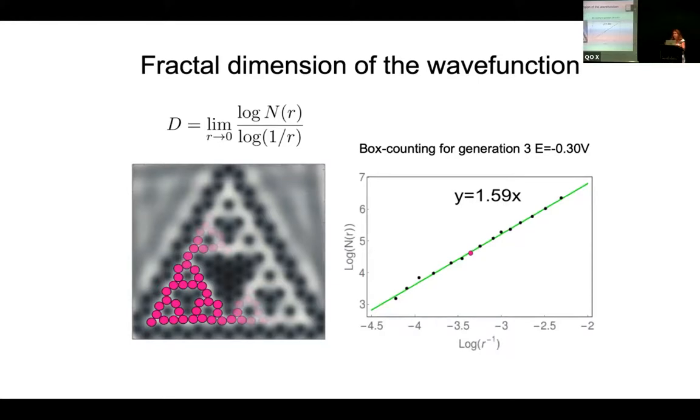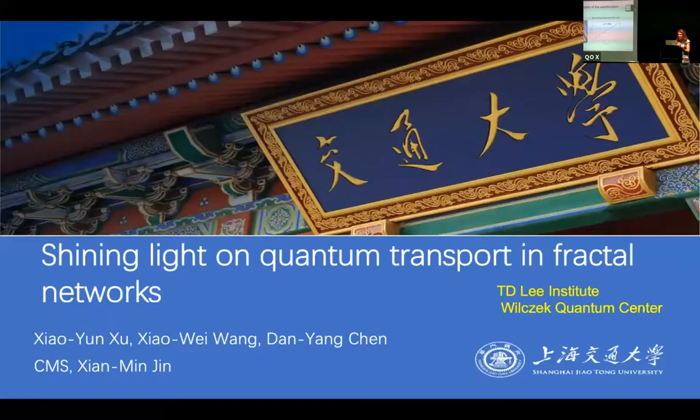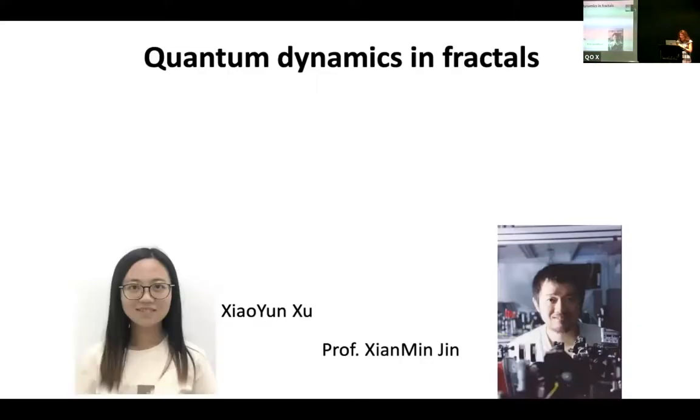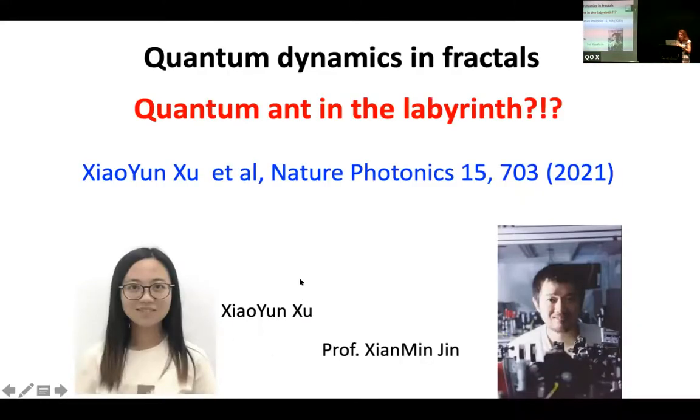But those were static fractals. With the STM, I cannot study dynamics. And now I would like to understand how is the transport, quantum transport in a fractal. So that's what I went on to study together with the group of Xian Ming Jin at Shanghai Jiao Tong University in China. So this work has been mostly performed by Xiao Yunshu. And the question that we want to address here is, how would a quantum ant move in a labyrinth? Because de Gennes has been studying the classical problem that he called the ant in the labyrinth to look at the diffusion of a classical particle in a fractal. And now we have a quantum ant. What should happen here? It was published very recently, this work.